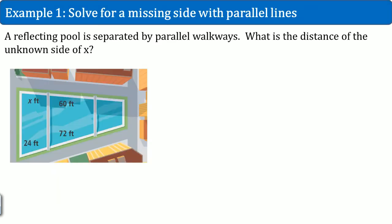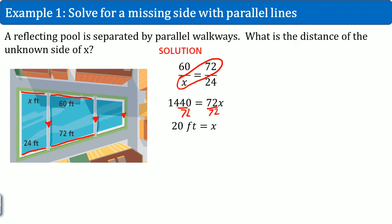Let's do an example problem. A reflection pool is separated by parallel walkways. What is the distance of the unknown side of X? We see here that it's separated by a parallel line. So this could be one more. And we saw that then we could set up the proportionality. So here's the solution. 60, which is the long side, divided by X is going to be equal to 72 divided by 24. Same process here. Cross multiply 60 times 24 and X times 72. Then we divide by 72 to both sides. You get X equals to 20 feet.